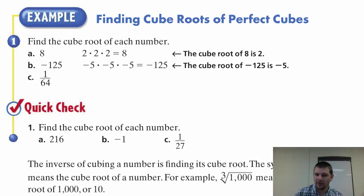C says one sixty-fourth. Just like with square roots, we can apply cube roots both to the numerator and denominator separately. The cube root of one is one. The cube root of sixty-four is four. Four times four times four is sixty-four. So the cube root of one sixty-fourth is one-fourth.